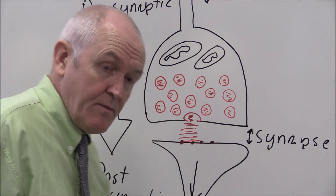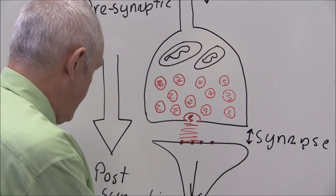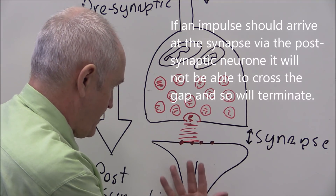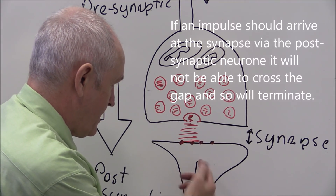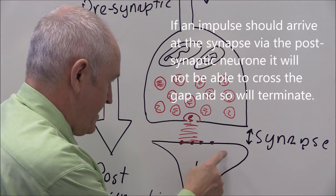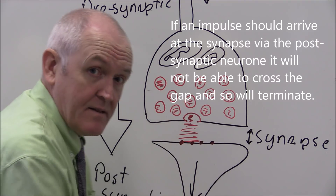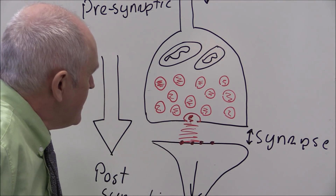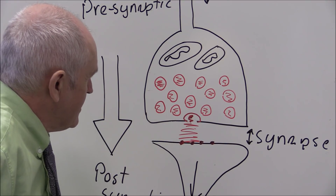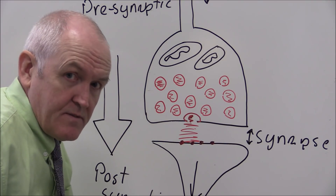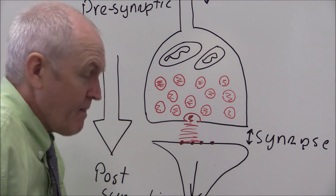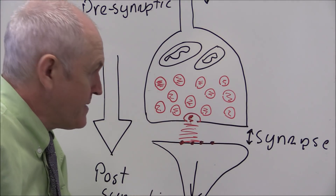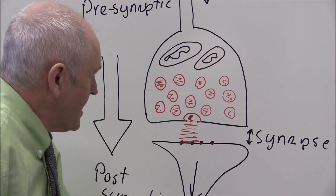If an impulse were to come the wrong way — traveling up the post-synaptic neuron — there is no chemical transmitter in the post-synaptic neuron, so it cannot propagate to the pre-synaptic side. This is how the synapse ensures one-way transmission from pre to post, but not from post to pre — just like a valve.